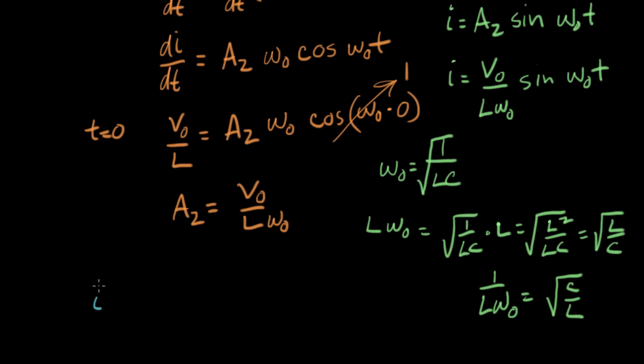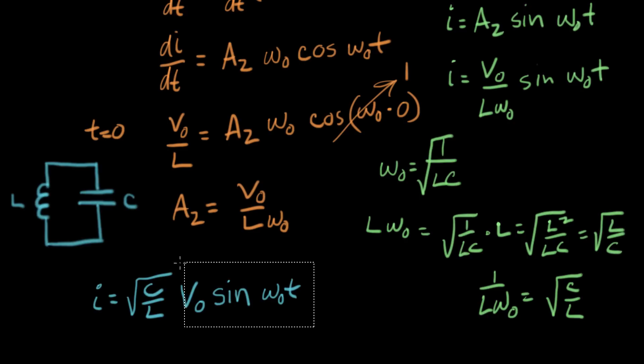Now we can write I equals square root of C over L times V-naught sine of omega-naught t. That is the solution for the natural response of an LC circuit. It's in the form of a sine wave. The frequency is determined by omega-naught which is the two component values, and the amplitude is determined by the energy we started with, which is represented by V-naught and the ratio of the two components. This is why I said at the beginning that this is where sine waves are born.